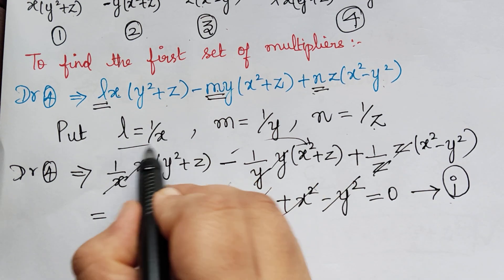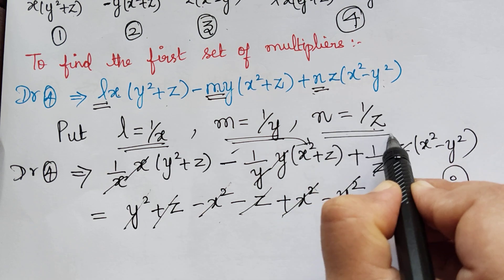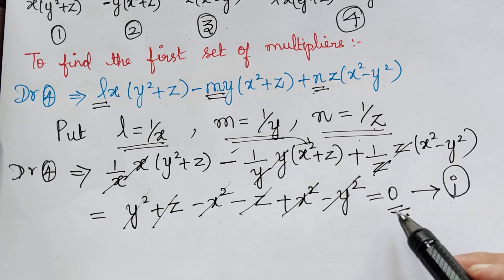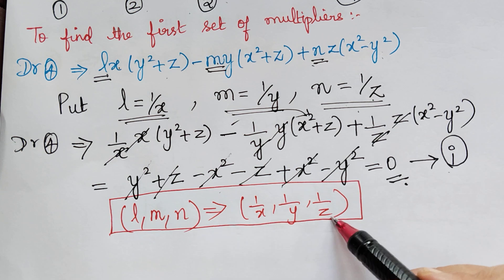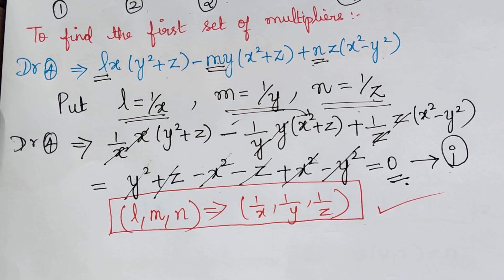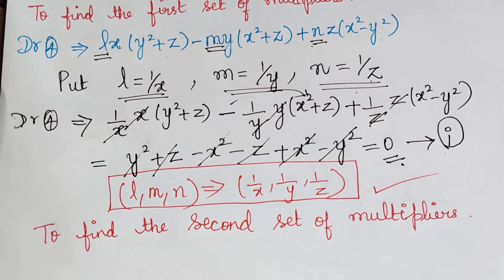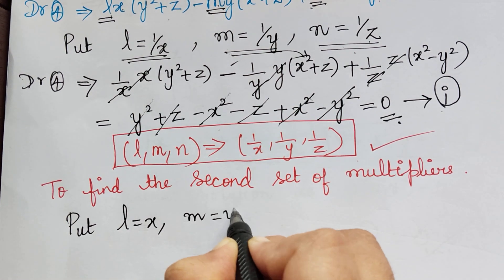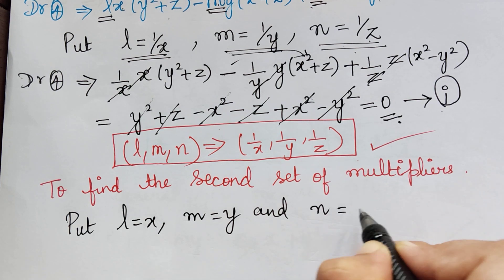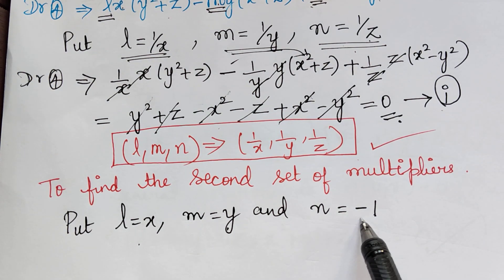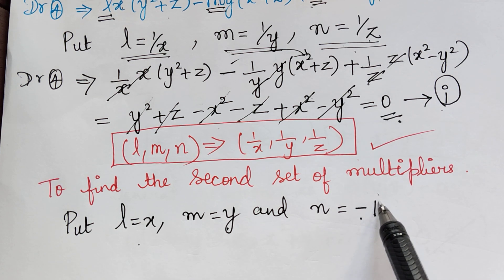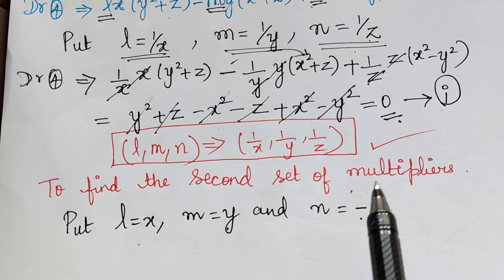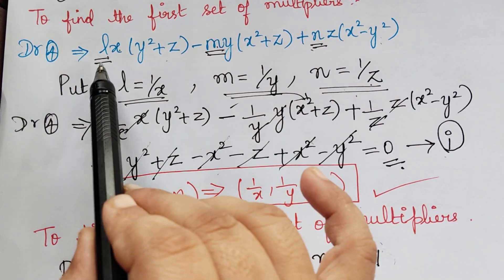The first set of multipliers is (1/x, 1/y, 1/z). Now for the second set, I choose L = x and M = y. To find N, I set the denominator equal to zero with L = x and M = y, then simplify to solve for N, obtaining N = −1.